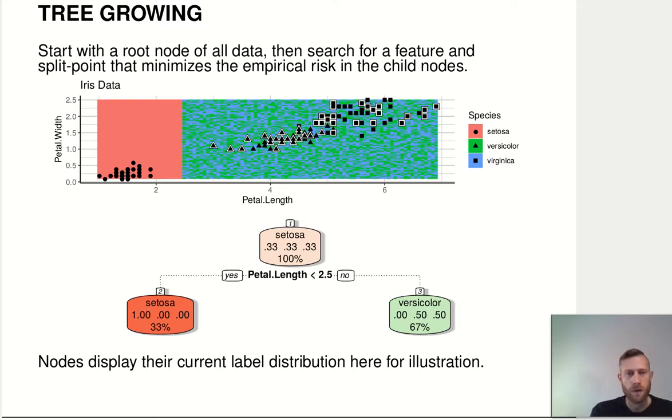Okay, so let's try to visualize that for the iris data. So this is the situation after the first split. So I start out with all my data in the root node and then I look at all possible split points along petal length and at all possible split points along petal width.